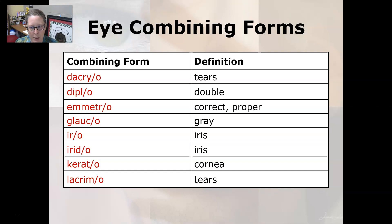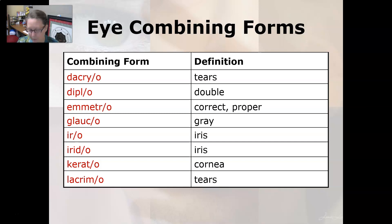Diplo means double. Emmetro means correct or proper. Glauco means gray. Iro or irid-o means iris. Kerato means cornea. And lacrimo means tears, along with dacryo.